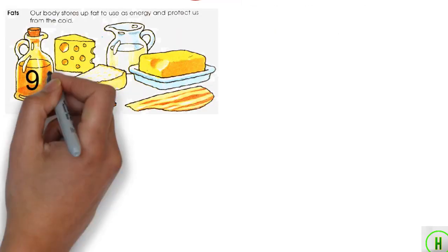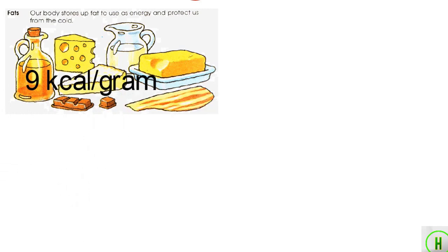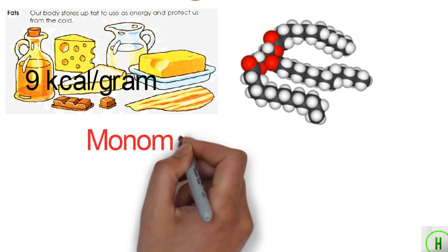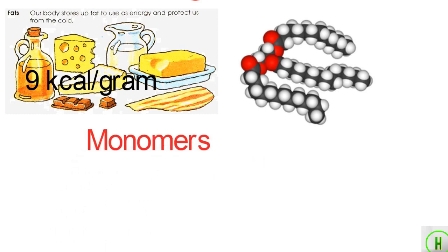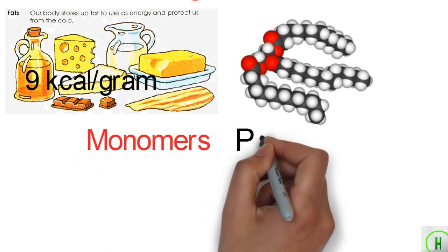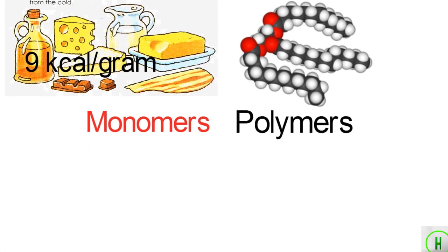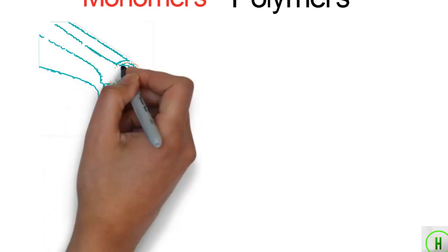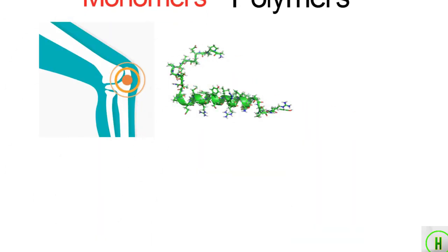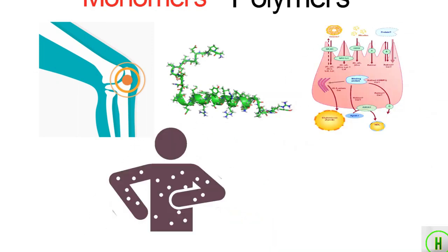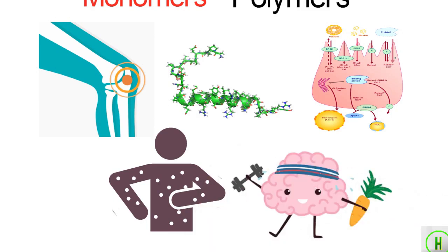Fats provide 9 kilocalories per gram. Fats are triglycerides — three molecules of fatty acid combined with a molecule of the alcohol glycerol. Fatty acids are simple compounds (monomers), while triglycerides are complex molecules (polymers). Fats are required in the diet for health as they serve many functions, including lubricating joints, helping organs produce hormones, assisting in absorption of certain vitamins, reducing inflammation, and preserving brain health.